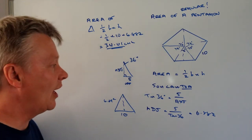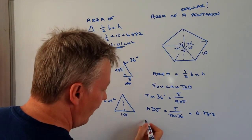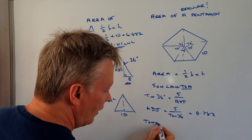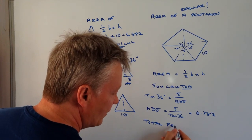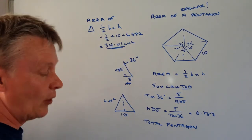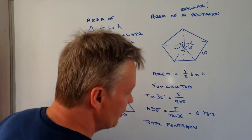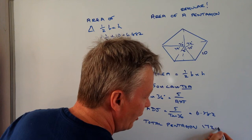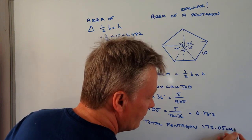If I then multiply that by 5, I'll get a total area of the pentagon, total pentagon area, okay, is going to be 34.41 multiplied by 5, which is 172.05 centimeters squared.